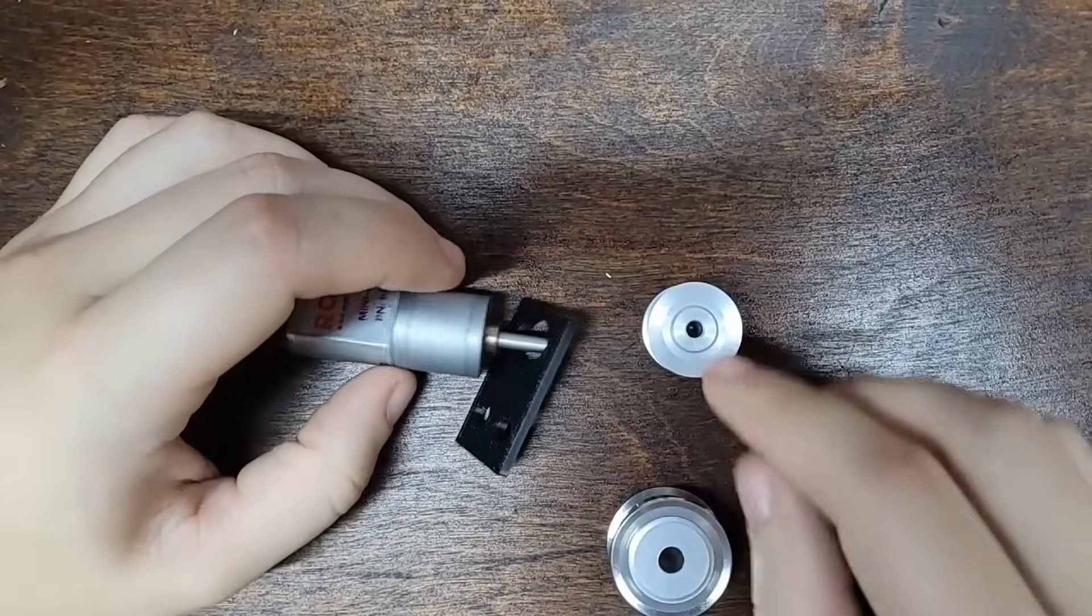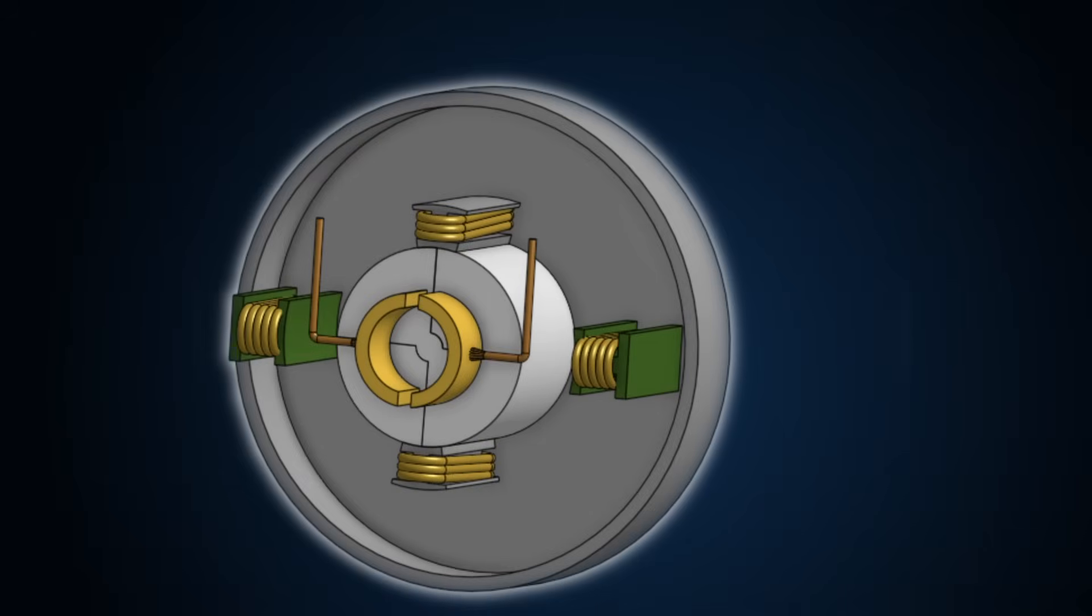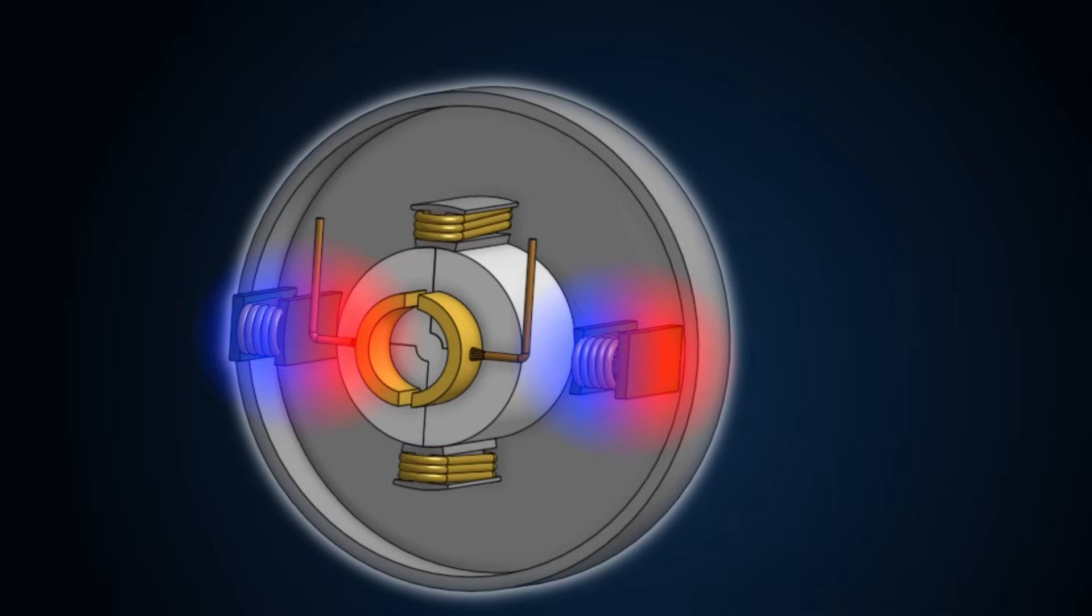To understand the problem, we'll start by reviewing the evolution of electric motors. The first motors used electromagnets for their entire operation. A ring of stationary coils produced a static magnetic field, and then internal coils would spin to align with that field.